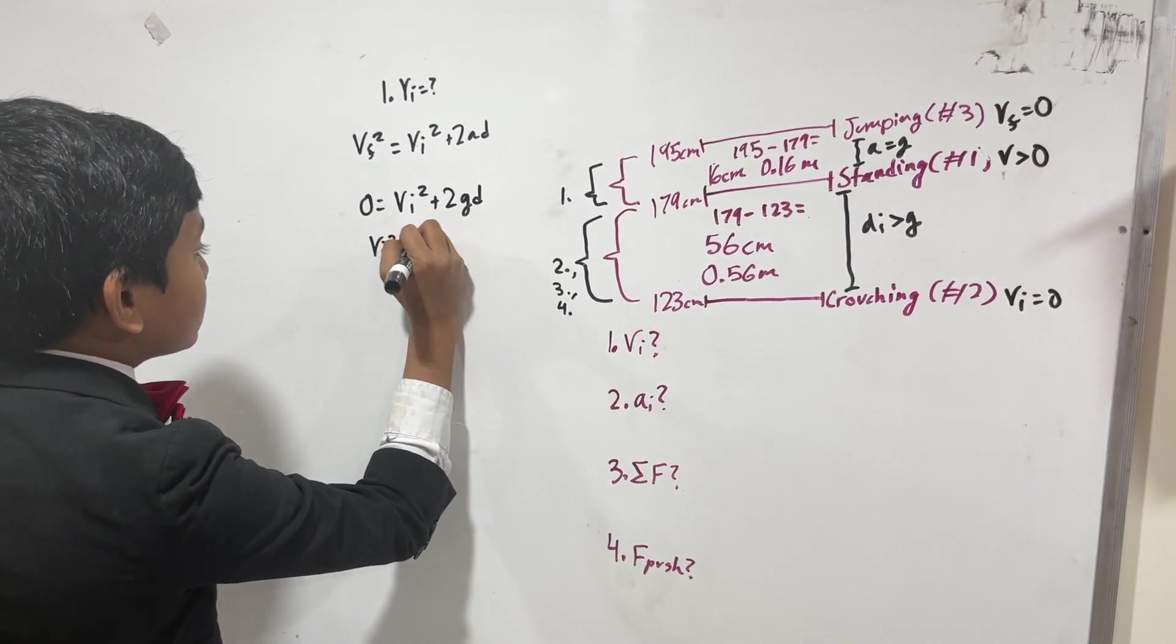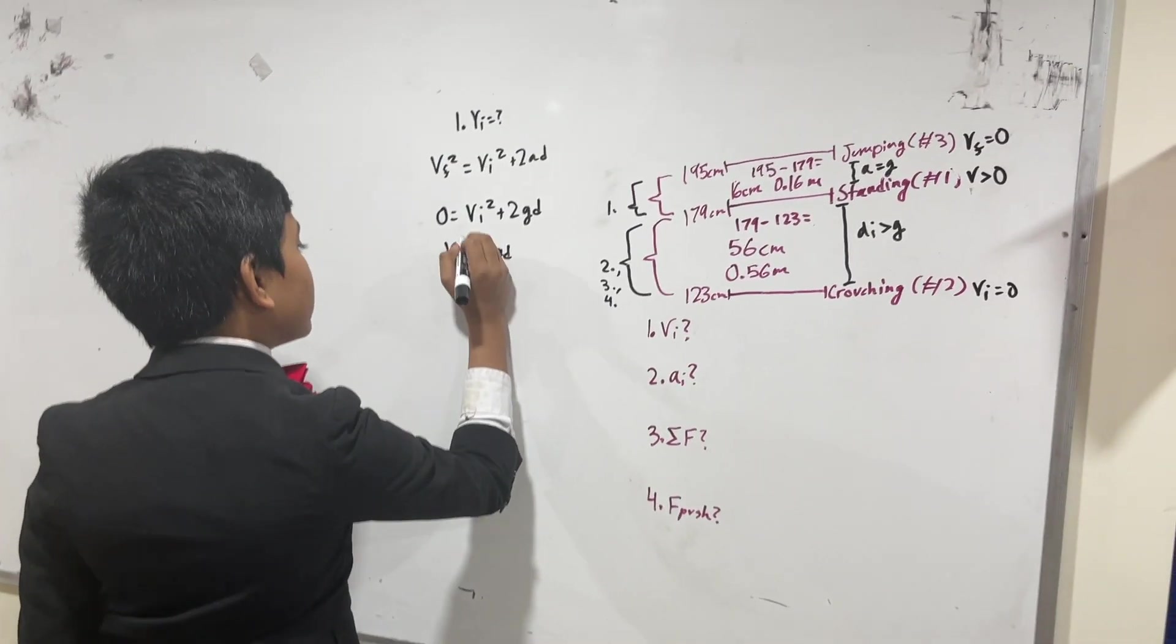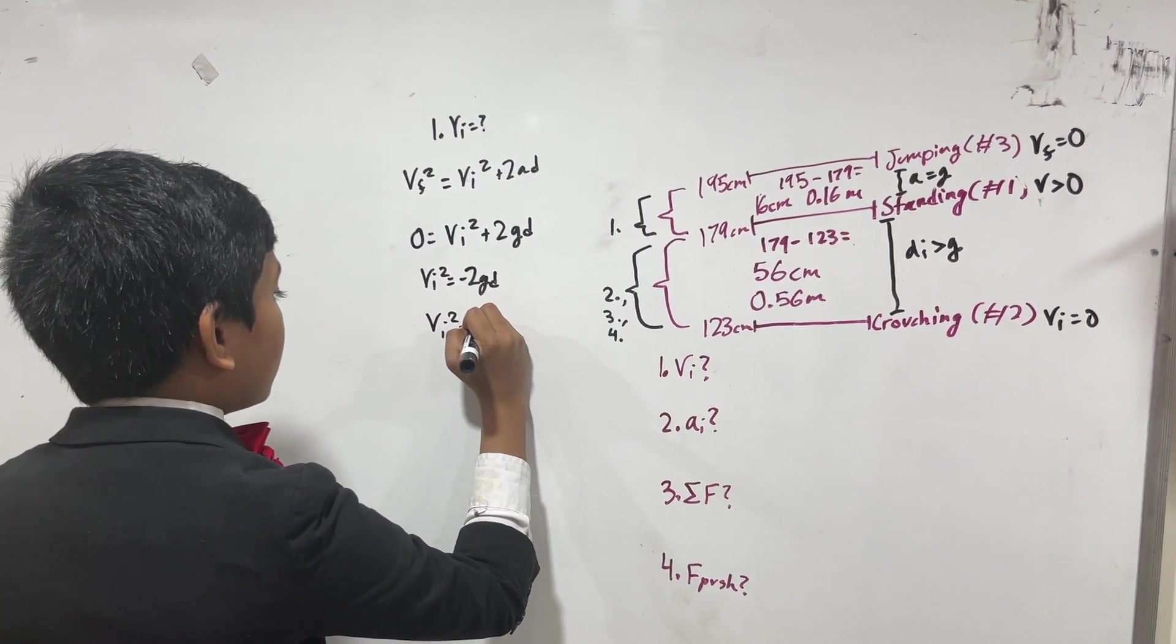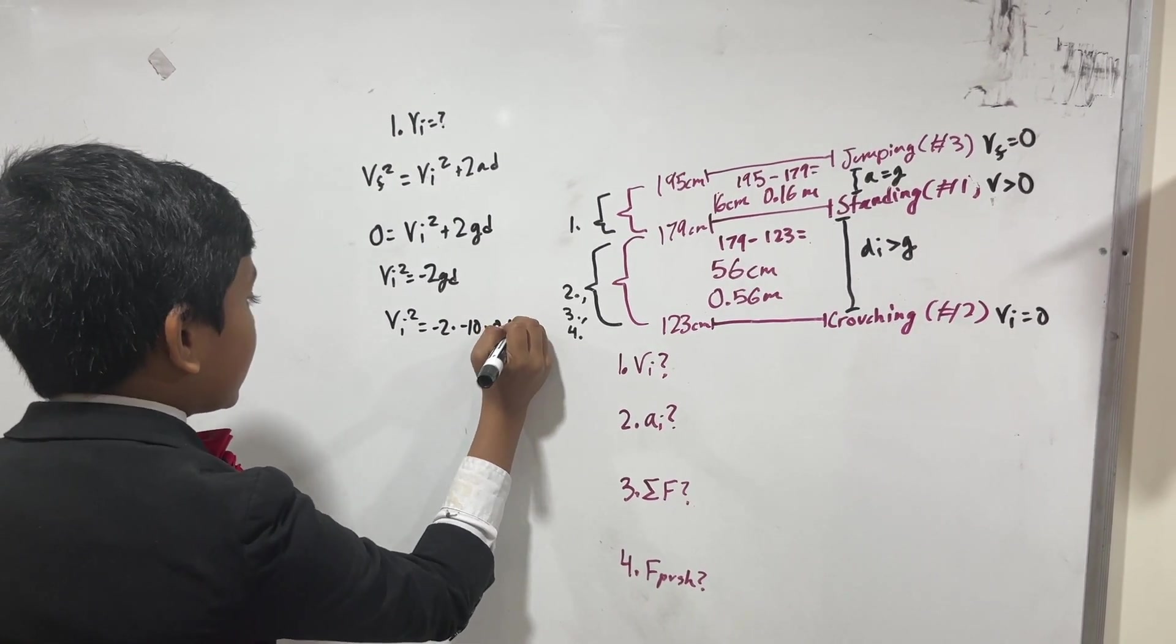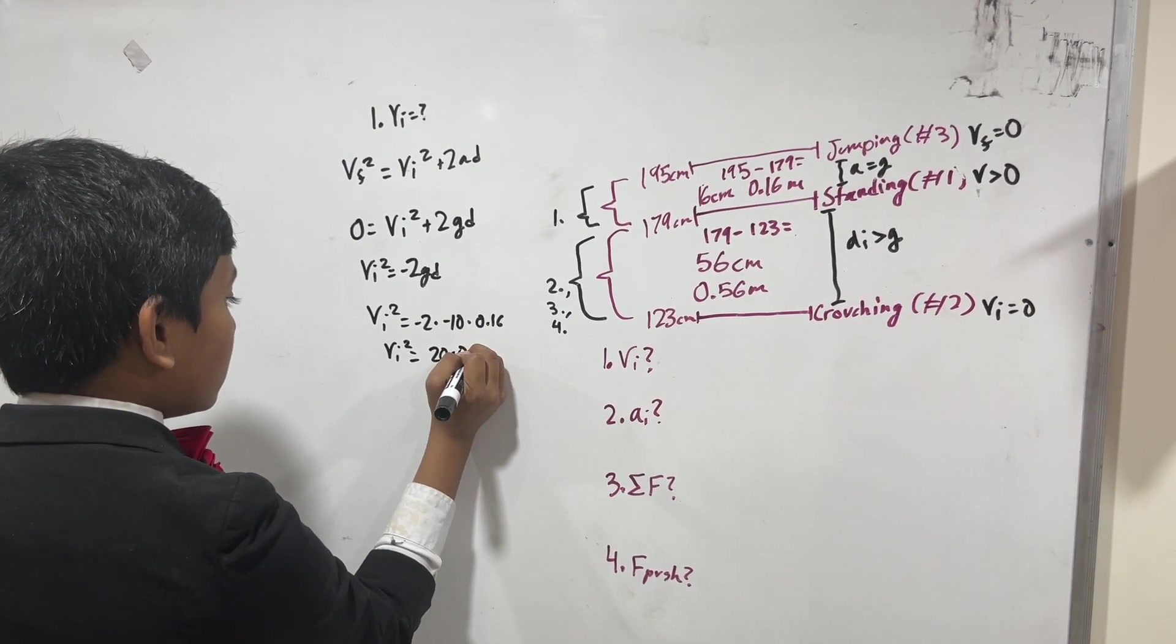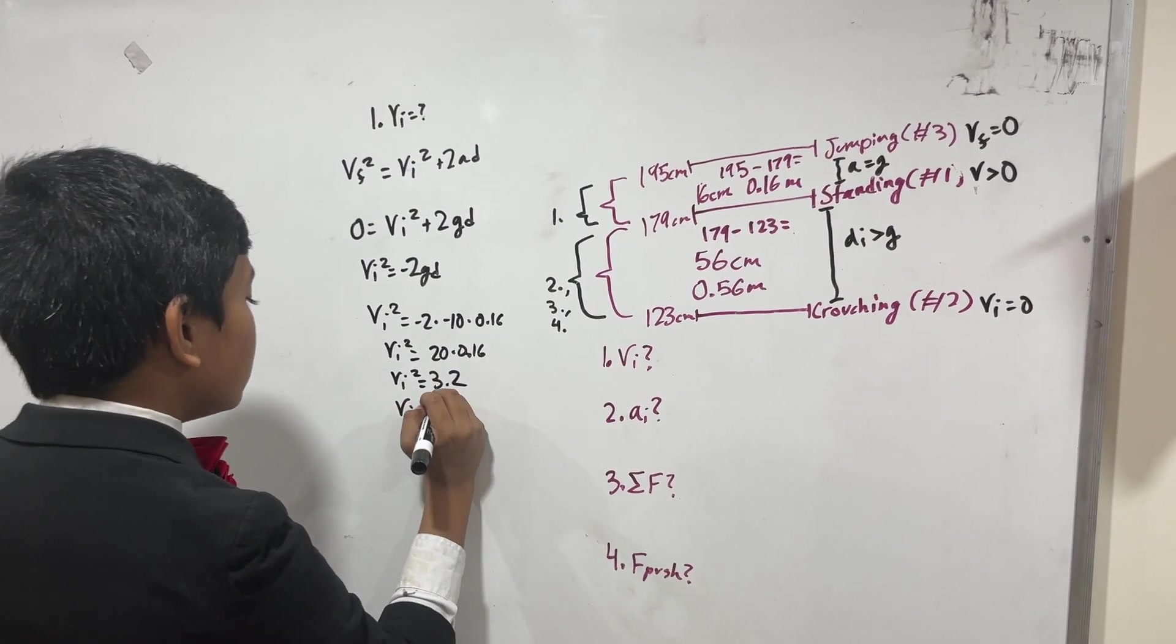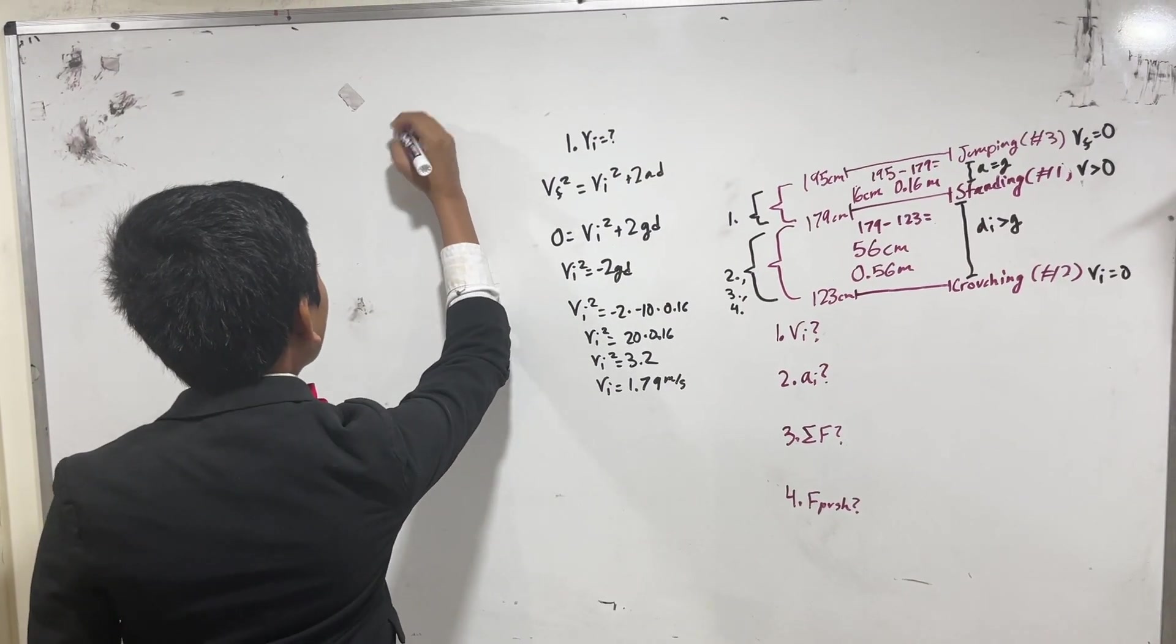VI squared equals minus 2GD. This might look worrying because we have a square and then a negative on the other side. But since G is negative, then we have minus 2 times minus 10 times D is 0.16. We have VI squared is equal to 20 times 0.16, which is 3.2. So VI, taking the square root, is 1.79 meters per second.